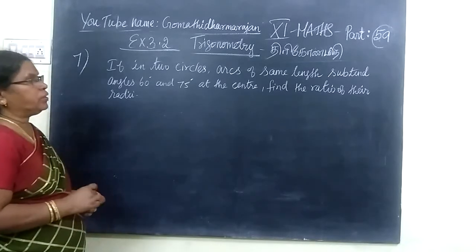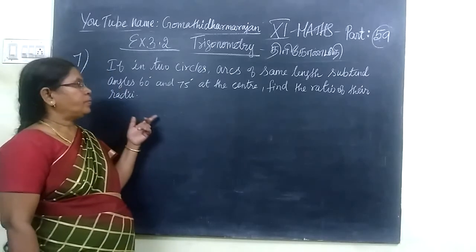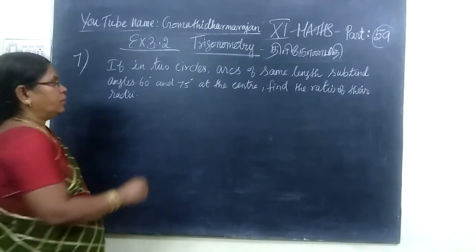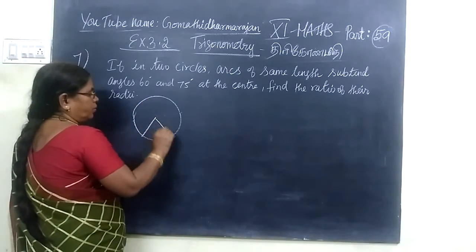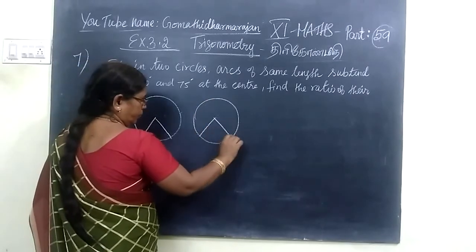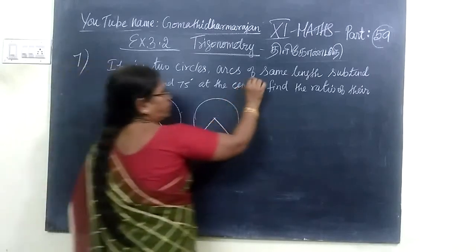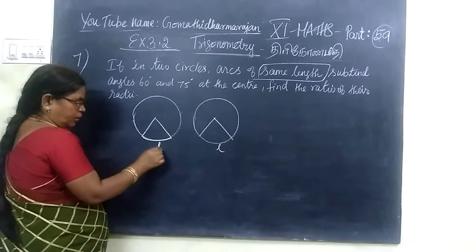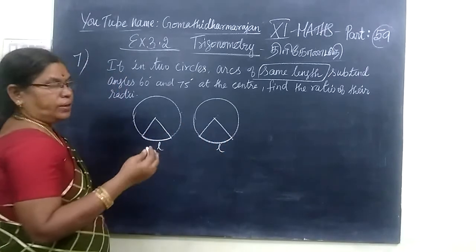Using 2 circles, arcs of same length, subtending 60° and 75° at the center, find the ratio of the radii. You are given 2 circles, this one here, arcs of same length. The arc length L is the same for both, but the radii are different.